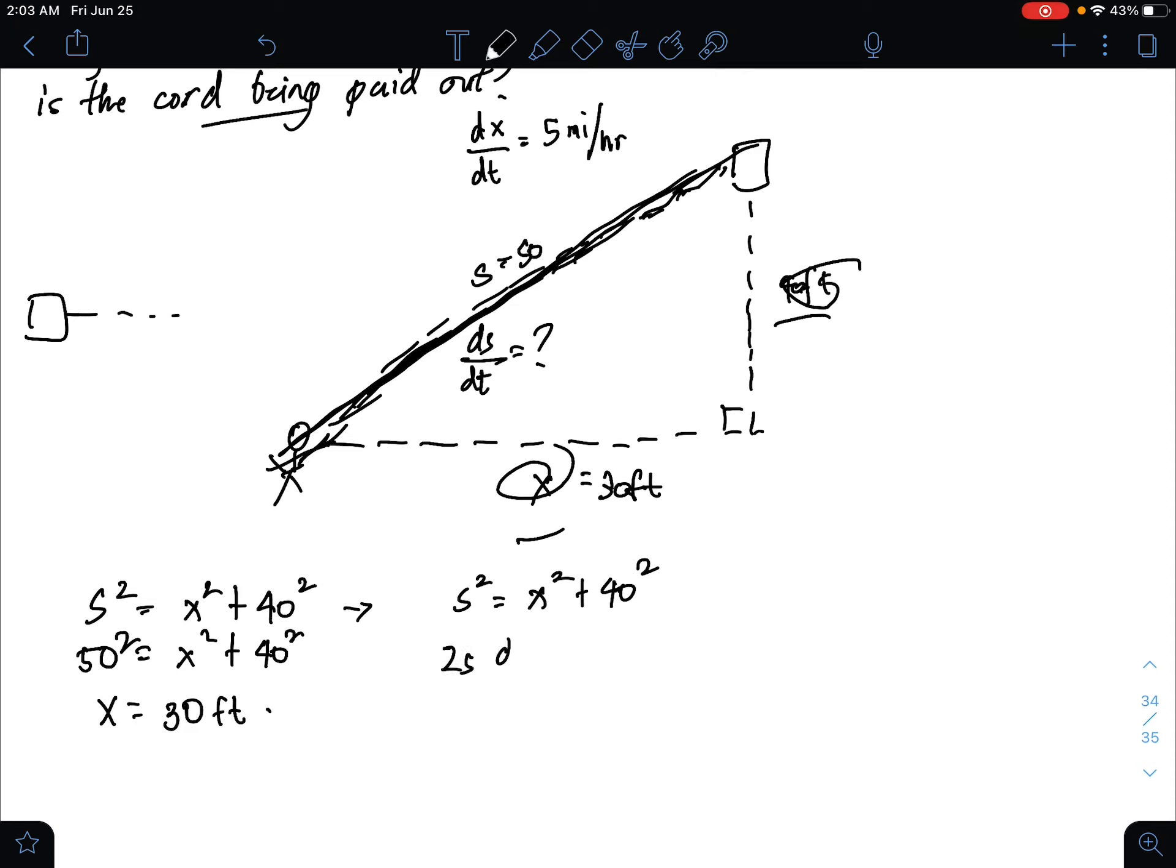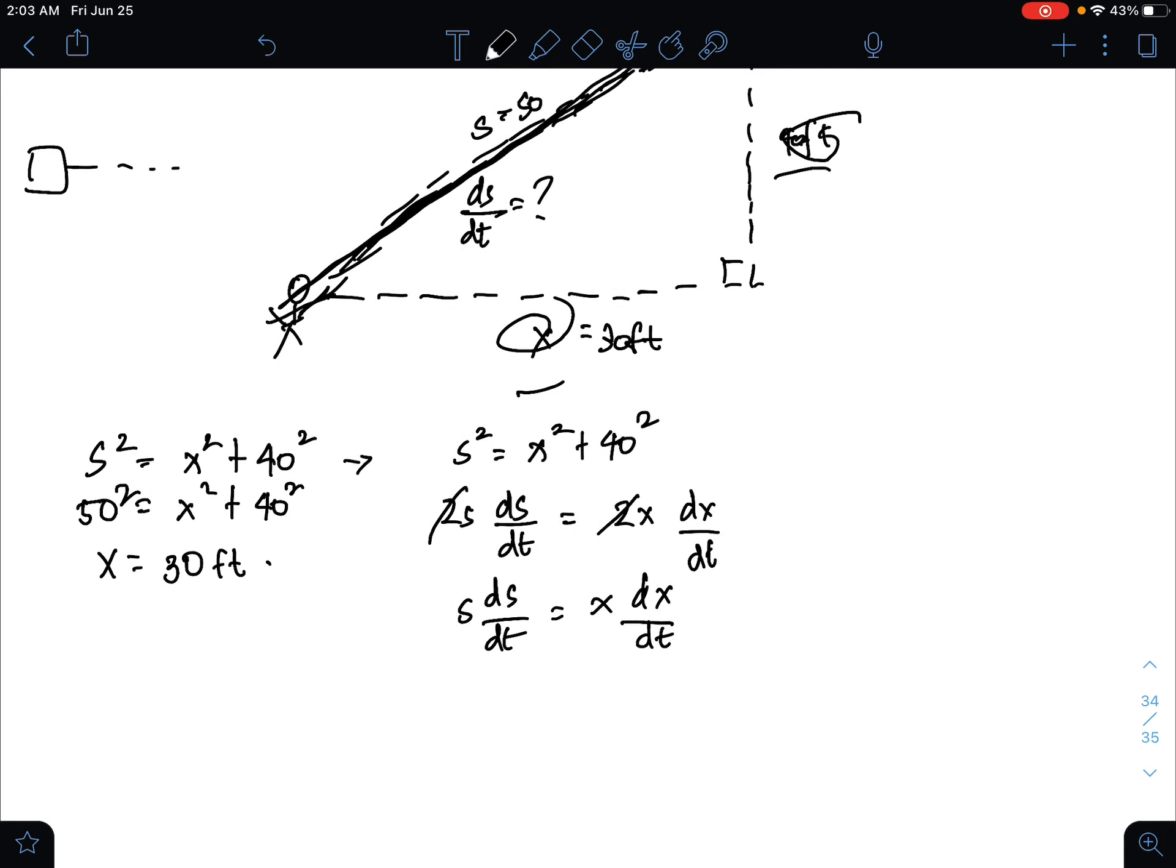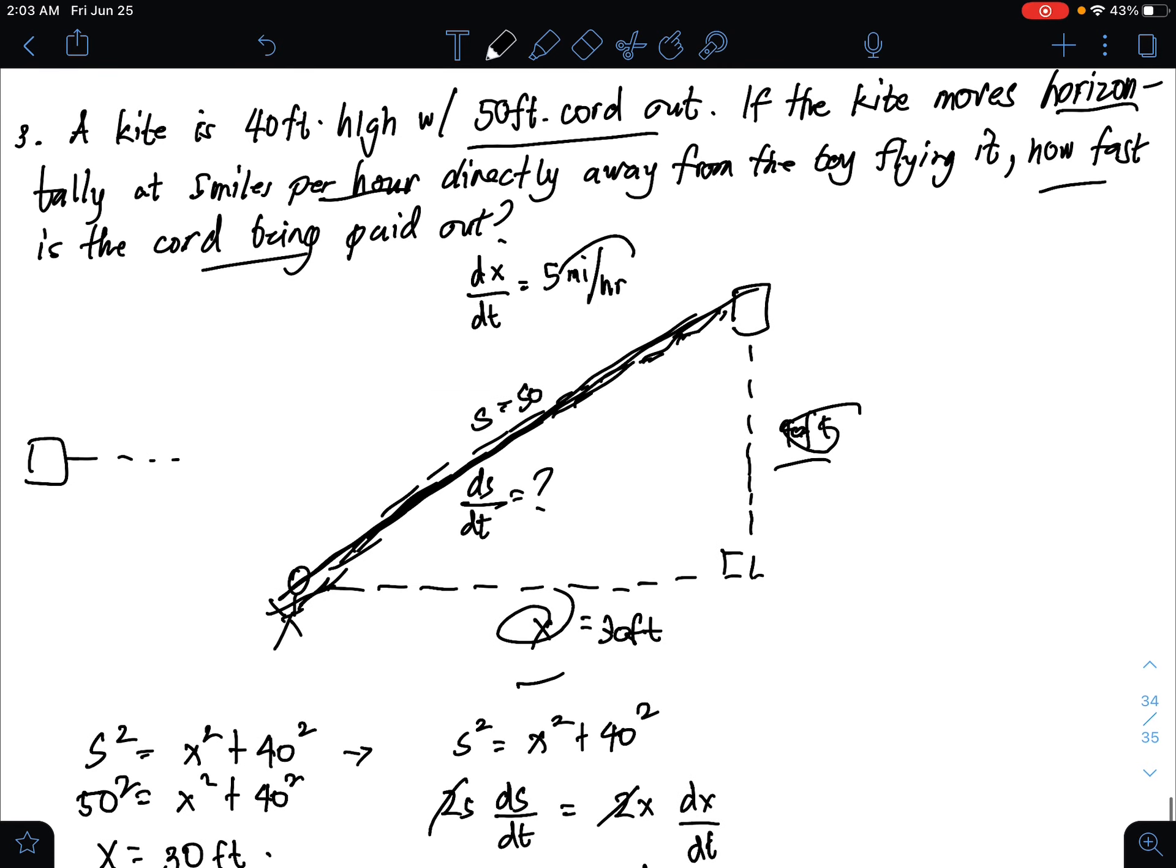Differentiate with respect to time. That's 2S dS over dt. With respect to time, this is 2X dX over dt, and the derivative of a constant is 0. Divide both sides by 2. Now that we have it, dX over dt, but take note that is in 5 miles per hour. We want to convert that into feet per second. Express your answer in feet per second.